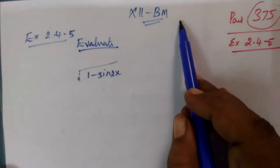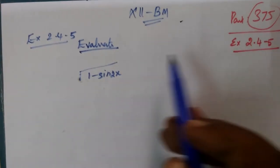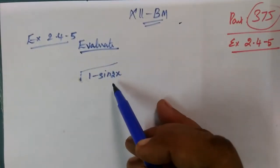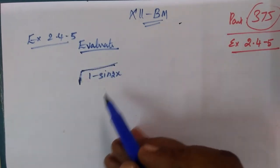Now let's look at business math, the example. Exercise 2.4, question number 5: integrate the following with respect to x. The question is root of 1 minus sin squared x.